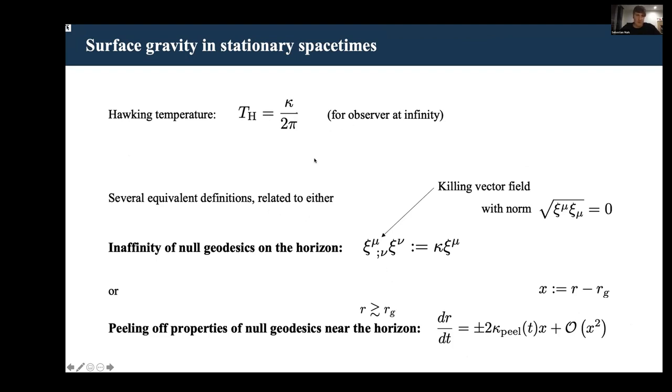In stationary spacetimes, there are several equivalent definitions. They can broadly speaking be categorized according to whether they're related to the affinity of null geodesics on the horizon. This definition involves contraction of the covariant derivative of the Killing vector field with its contravariant component.